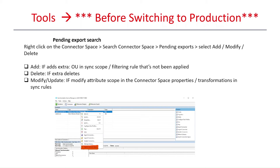If you see unexpected results in the pending export, it depends on the operation. For Add: if you see unexpected adds, check if an additional OU has been selected for synchronization, or if a certain filtering sync rule has not been applied. For Delete: if you see unexpected deletes, check if any OUs were unselected in the OU configuration of AAD Connect, which may have led to pending deletes in the export cycle. For Modify or Update: check if there are any modified attribute scopes in the connector space properties, or if there are any transformations in the sync rules.